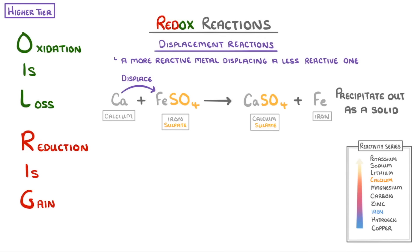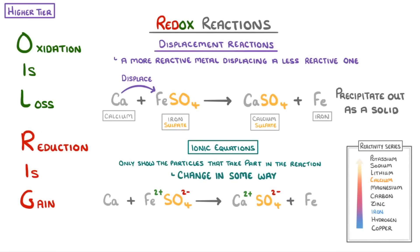For reactions like this, it's sometimes useful to write them as ionic equations, in which we only show the particles that actually take place in the reaction and change in some way. For example, if we showed everything here as ions, we can see that these sulfate ions stay as SO4 2- ions. They don't actually change or take place in the reaction by exchanging electrons. Because of this, we call them spectator ions and get rid of them from our equation. And what we have left is the ionic equation.